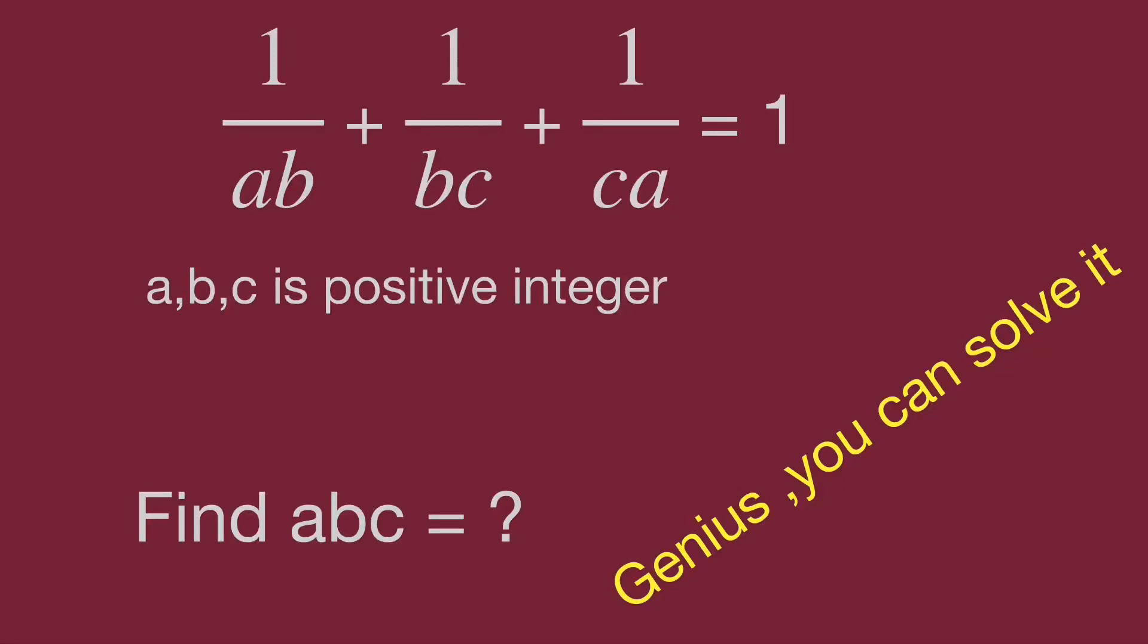Hello, you are watching Balahippo Math Genius Riddle. The question is: 1 over AB plus 1 over BC plus 1 over CA equals 1, where A, B, C are positive integers. Find the value of A times B times C.